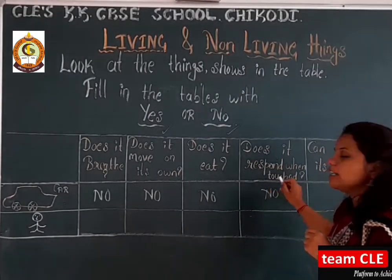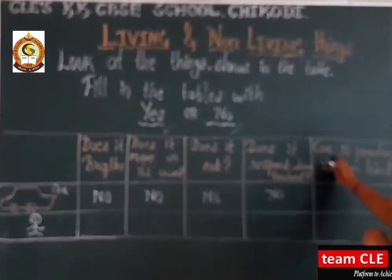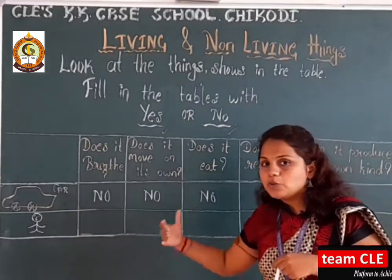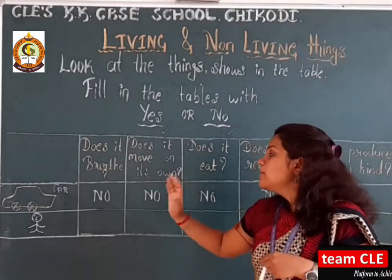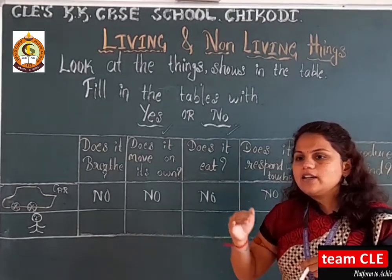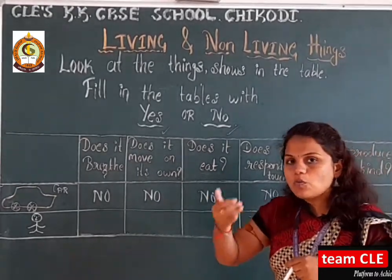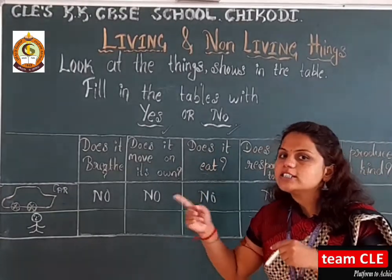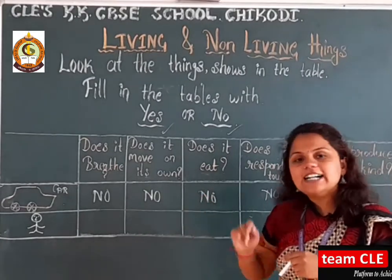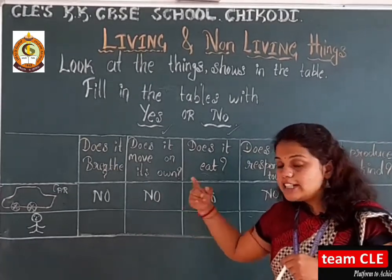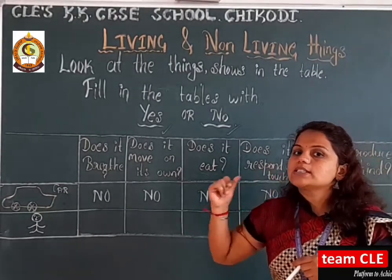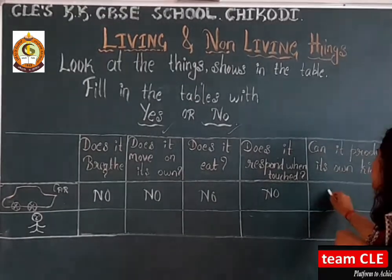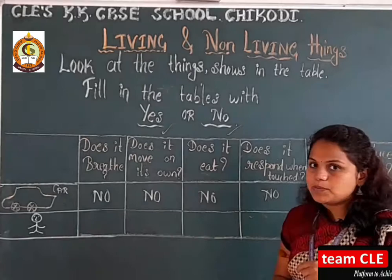Does it respond when touched? No. Can it produce its own kind? No — if you take one car, can it produce another car? No. If you want another car, you have to go to the showroom and order one. The car cannot produce its own kind. The answer is no.